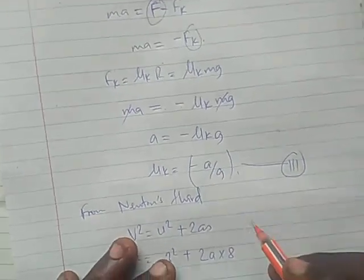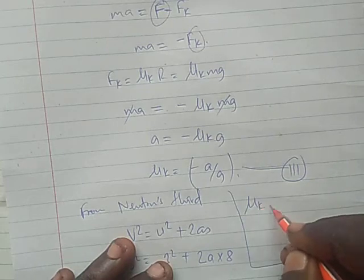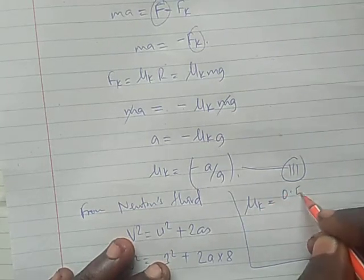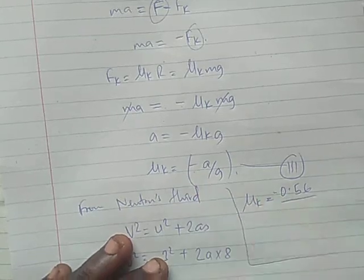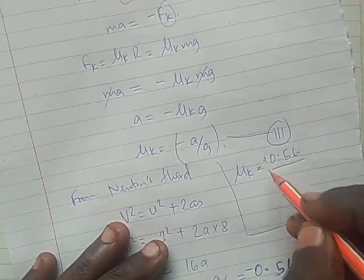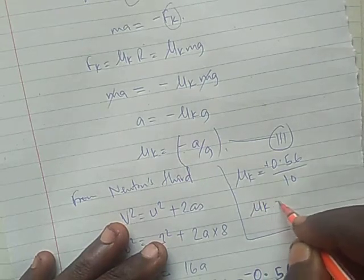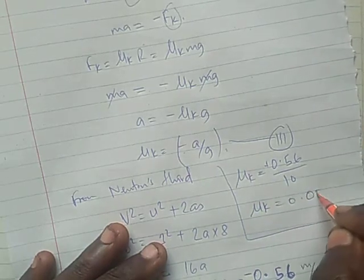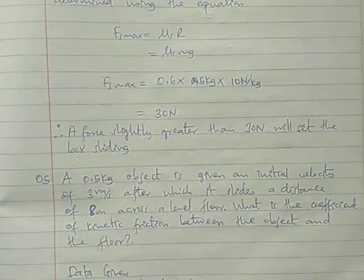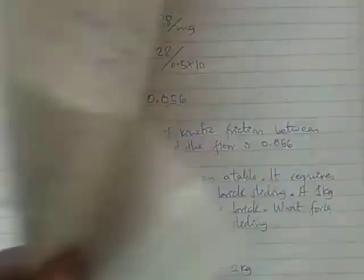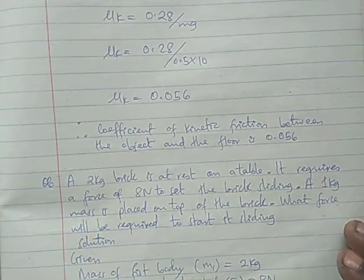So from there mu k is equal to 0.56 negative divided by - simply this negative and the negative acceleration will cancel. So positive divided by 10, mu k will be equal to 0.056. That will be the coefficient of kinetic friction.